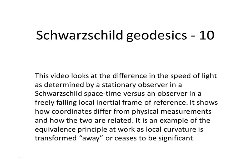This video looks at the difference in the speed of light as determined by a stationary observer in a Schwarzschild spacetime versus an observer in a freely falling local inertial frame of reference. It shows how coordinates differ from physical measurements and how the two are related. It is an example of the equivalence principle at work as local curvature is transformed away or ceases to be significant for small regions of spacetime.